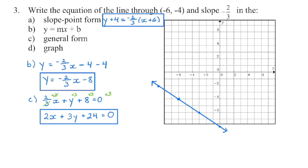For general form, I need all terms lined up with a positive x. x is currently negative, so it comes over to this side making it positive. y is not moving — y was positive and stays positive. The negative eight comes over so its sign changes. Nothing is left on the right-hand side, so we set it equal to zero. We cannot have fractions in general form, so because the denominator is three, multiply every term by three to cancel the denominator, leaving the numerator. Multiply those terms together to get the formal form — make sure you have equals zero.